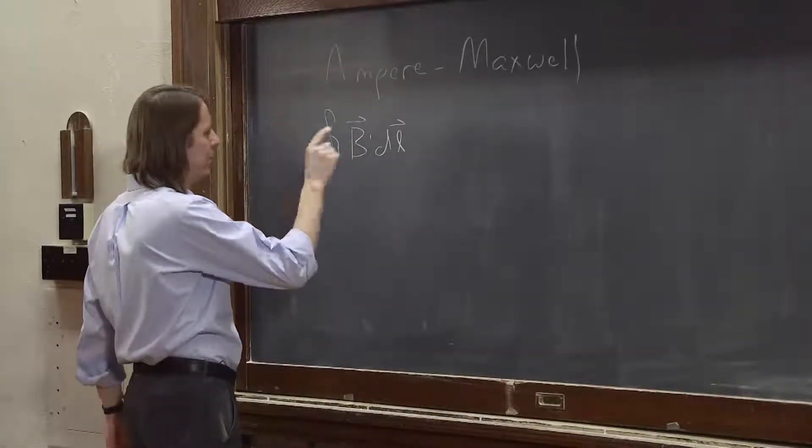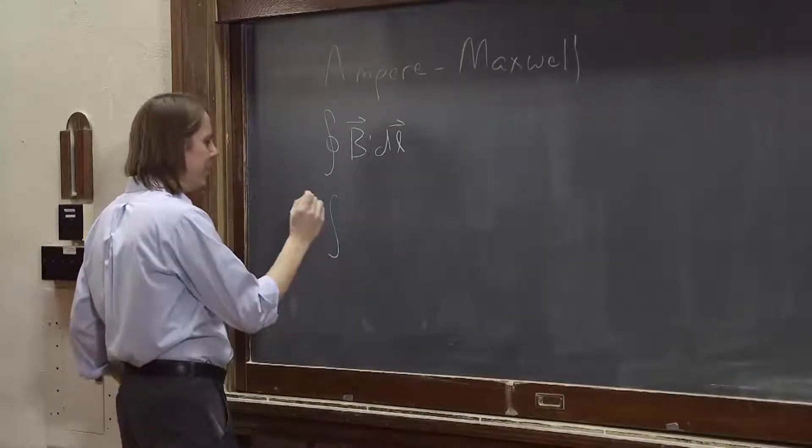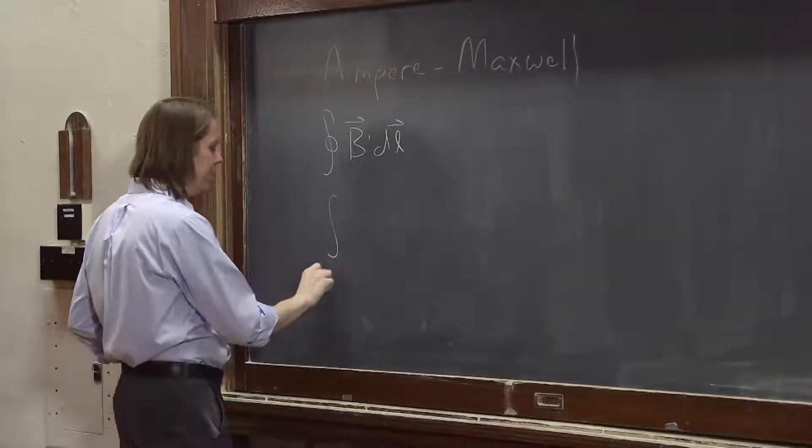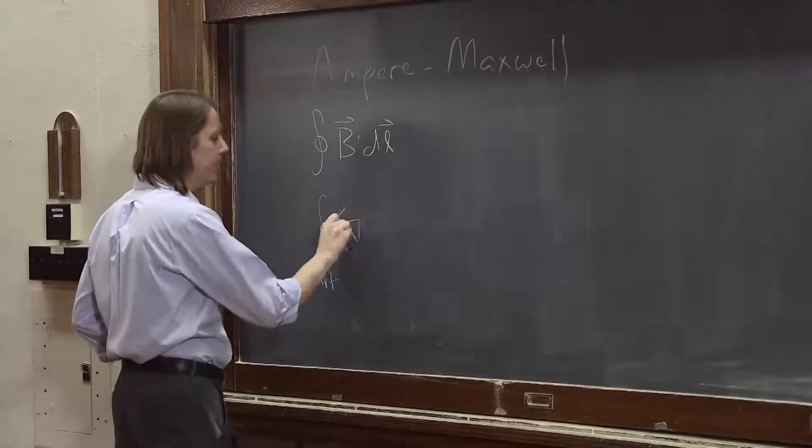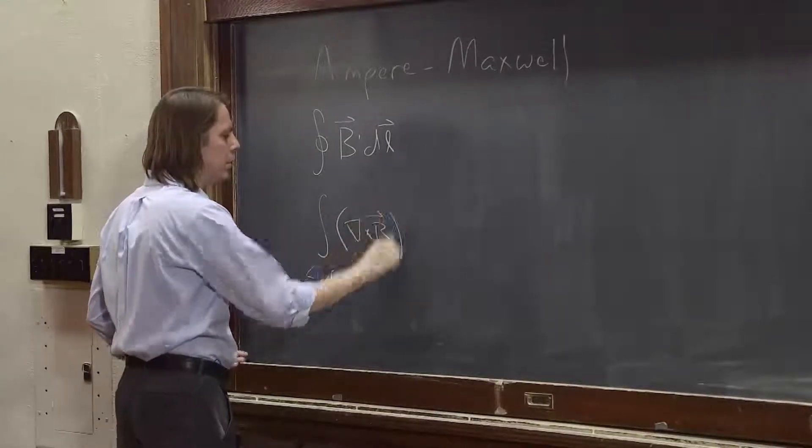So we know, then, we can replace this with the integral of how much of that curl did it have, of a surface integral of del cross B.